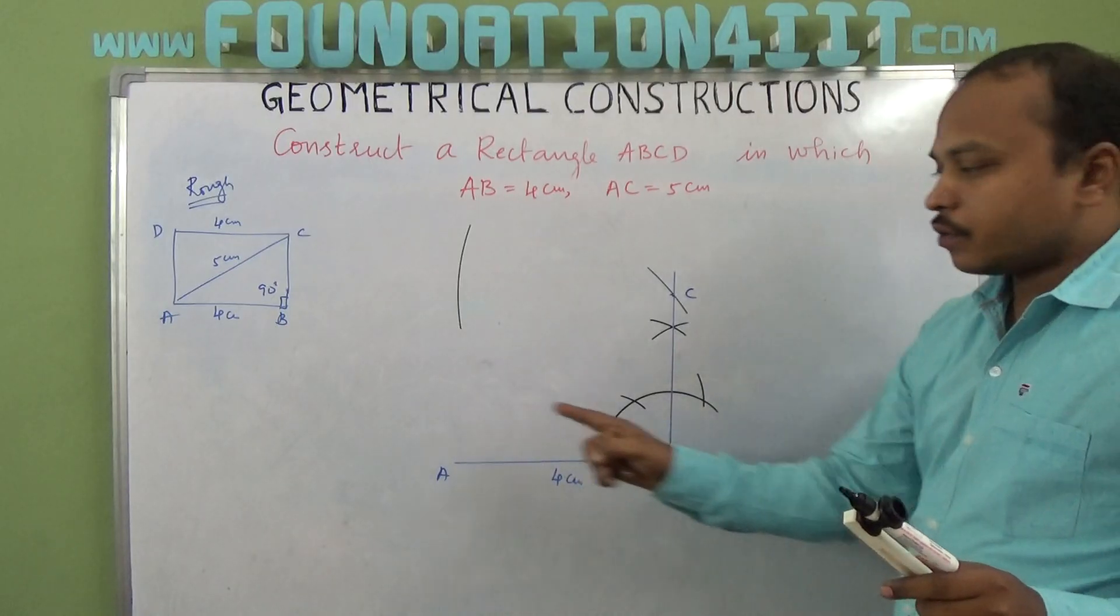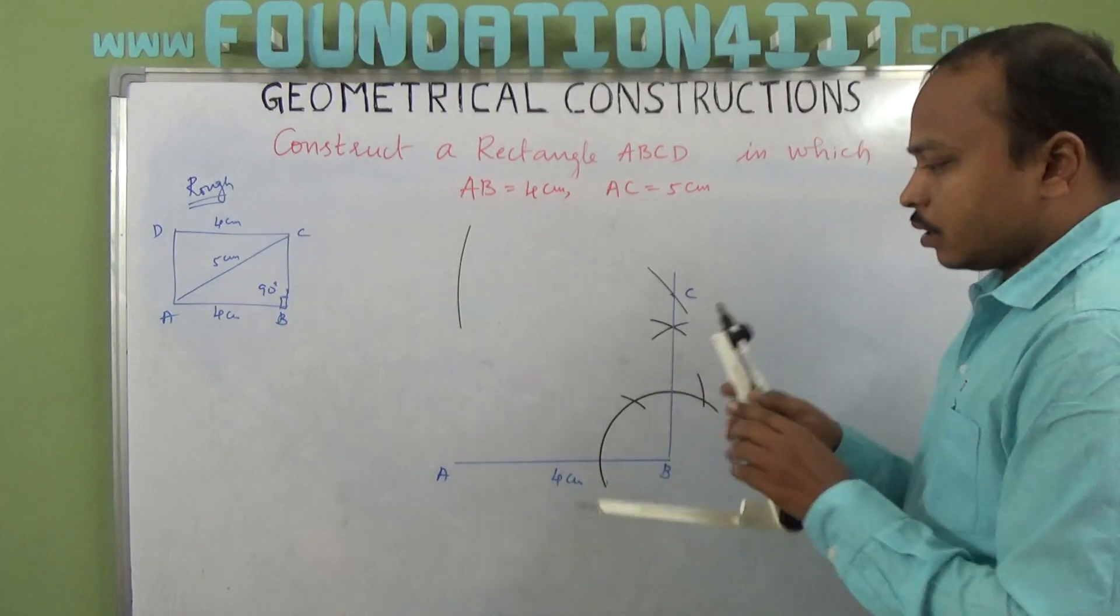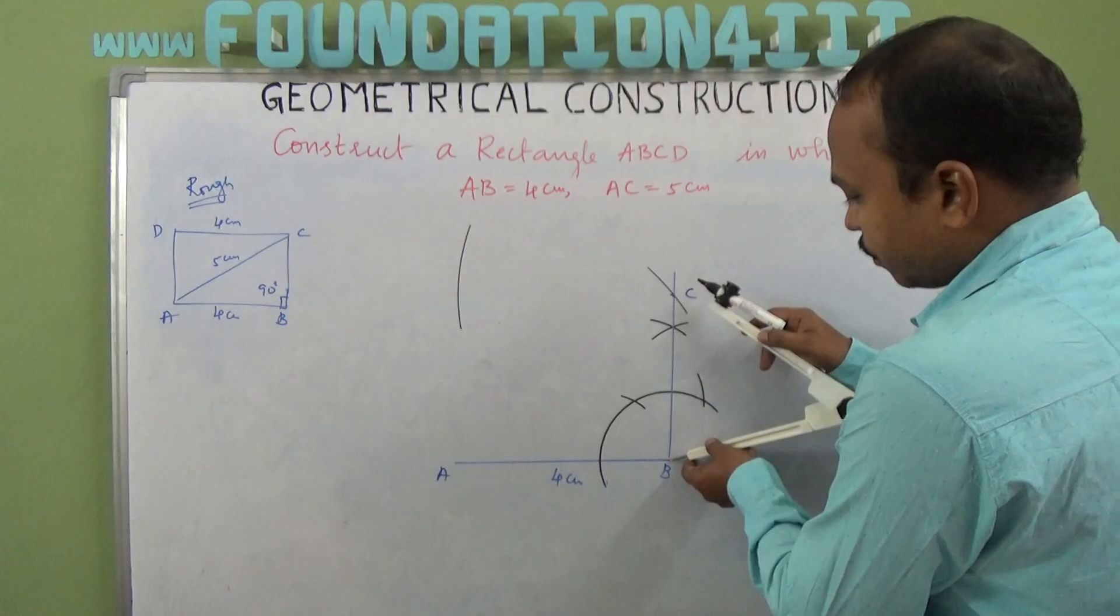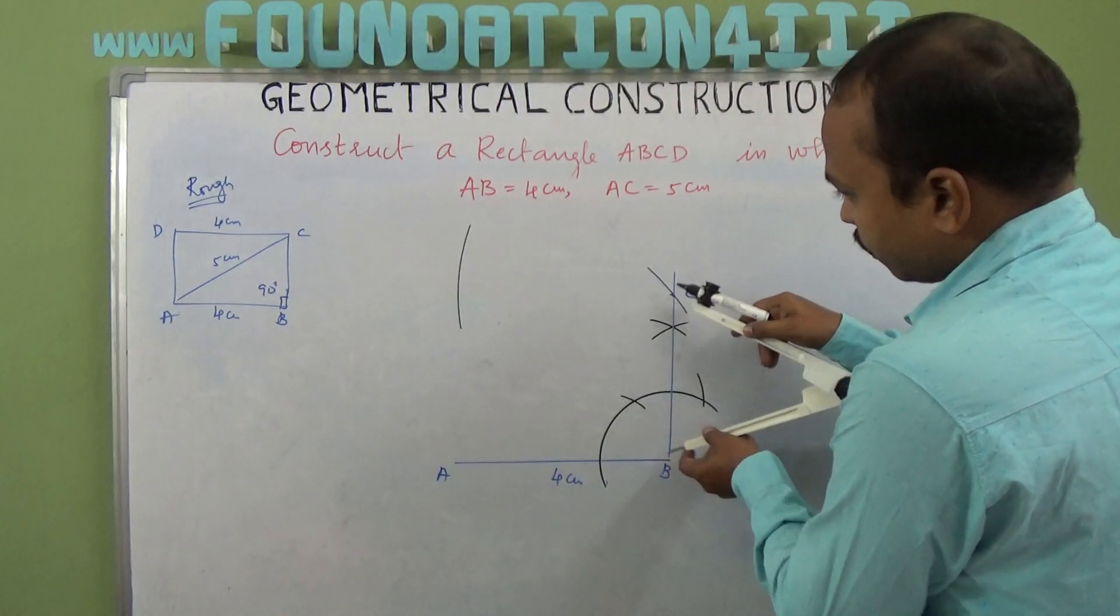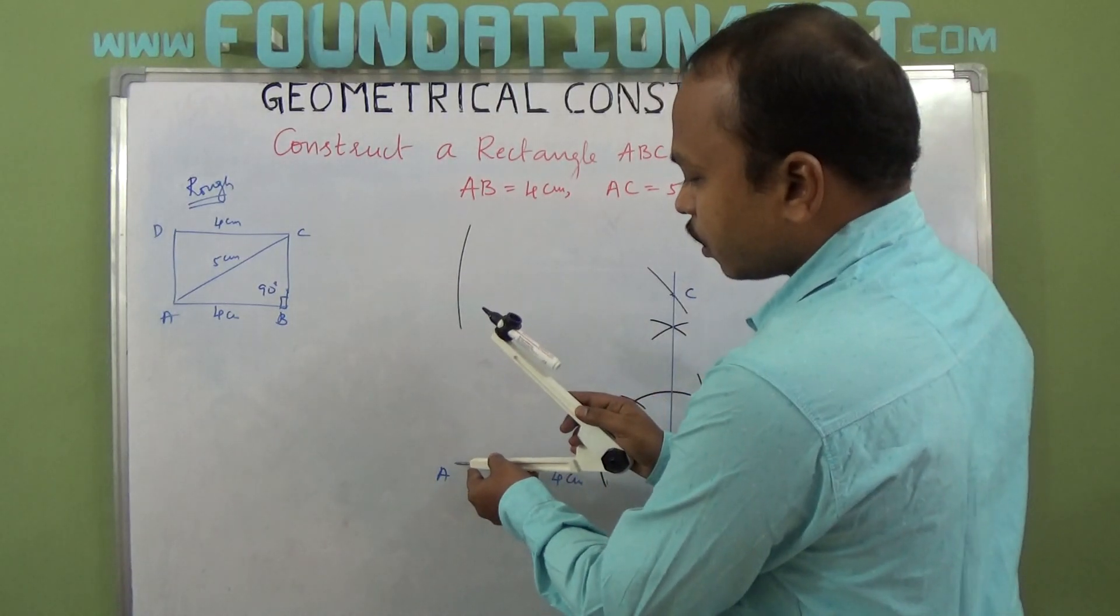Again, B to C is equal to A to D. Now find the distance from B to C, how much it is. Same from A also you can draw an arc.